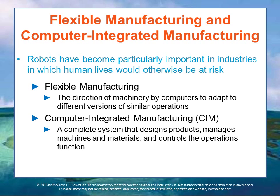With all of these technologies — CAD-CAM, which stands for computer-aided design and computer-aided manufacturing, flexible manufacturing, robotics, and computer systems — these are all put together in what's called computer integrated manufacturing, or CIM. CIM is a complete system that designs products, manages machines and materials, and controls the operations function. Companies adopt CIM in an effort to boost their productivity, the quality of their products, and reduce costs.